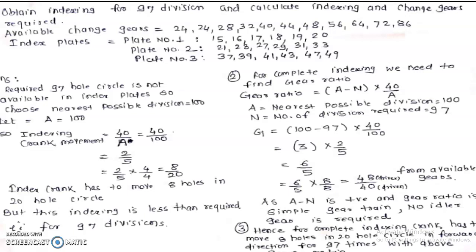The given indexing is for 97 divisions. In all the plates there is no whole circle for 97, so it is difficult by simple indexing and compound indexing. Therefore, for this larger number we will continue with differential indexing using a gear train mechanism. Since 97 is not available in the index plate, we choose the nearest possible division.